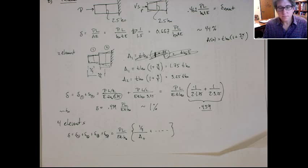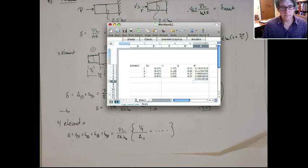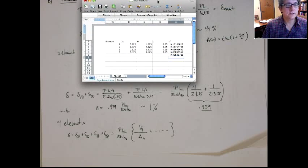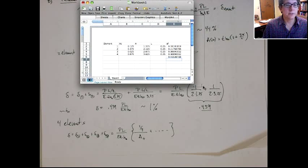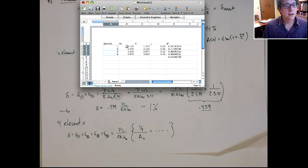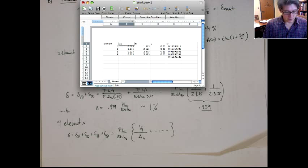So here's a spreadsheet. It's real simple. It pretty much does that. So here are the four elements. I'm picking the center points. This is really the center point of the element normalized by L. So the first one is halfway down the first element. They're all at the half points. So that's at 0.125.